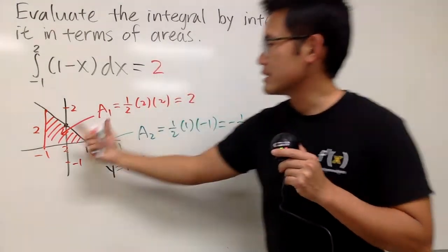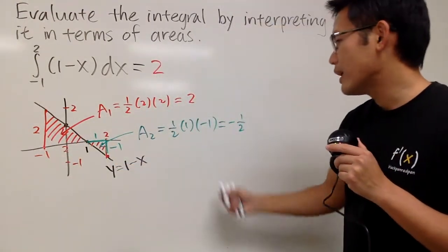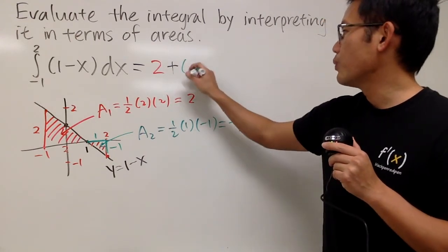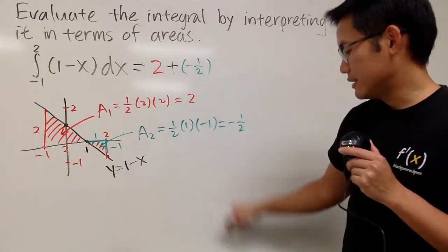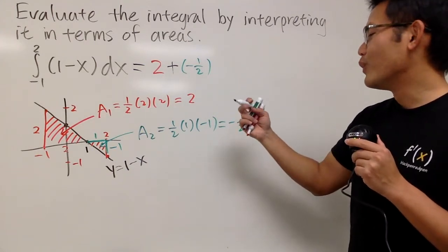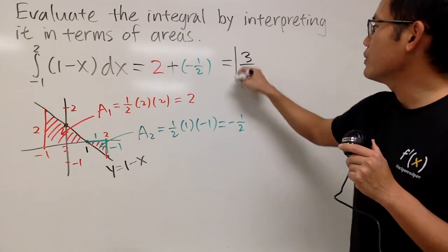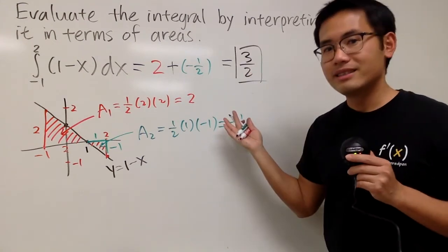Because that's this portion, and then we have to combine it with this value, which is negative 1 over 2, like this. Of course, work out our fraction, 2 minus 1 half, of course, we get 3 over 2, and that's it.